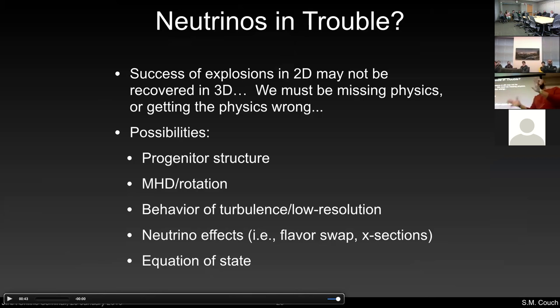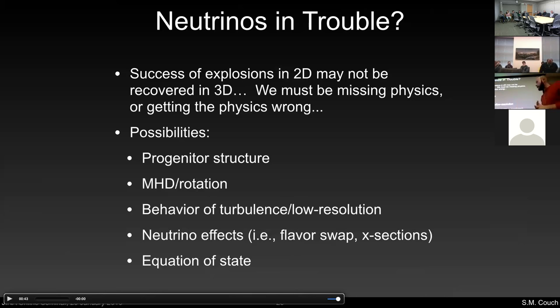Is the neutrino mechanism in trouble? Success in some 2D simulations might not be recovered in 3D — but this tells us we're either missing physics or getting some physics wrong, because we know these things blow up in nature. There are many possibilities: we don't know the equation of state precisely; we don't know all neutrino effects, like flavor swapping or some cross sections; low-resolution turbulence effects; we typically ignore rotation and MHD even though all stars rotate and have magnetic fields; and also the progenitor structures.